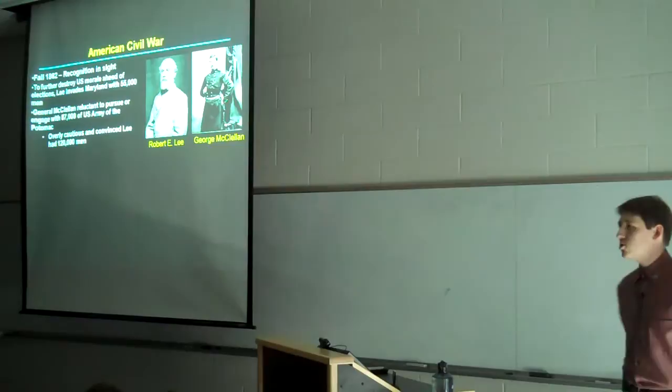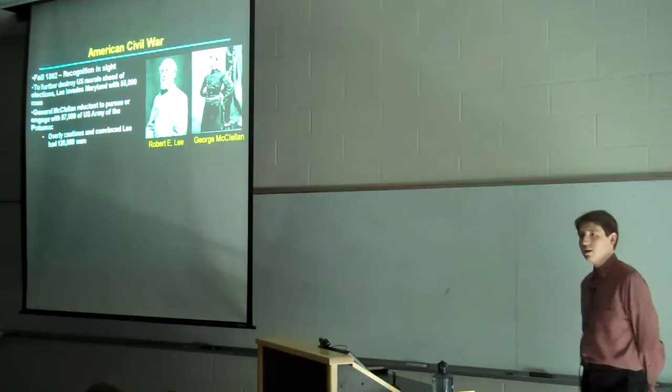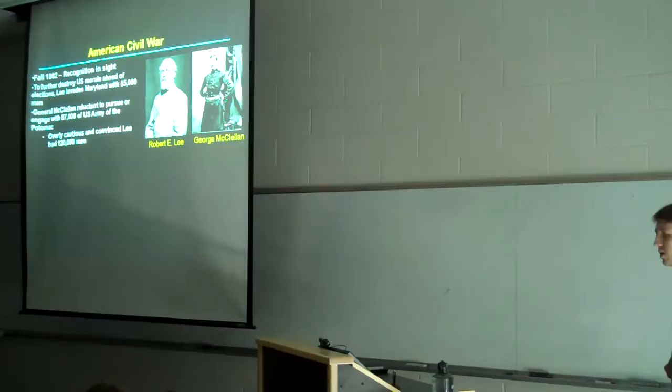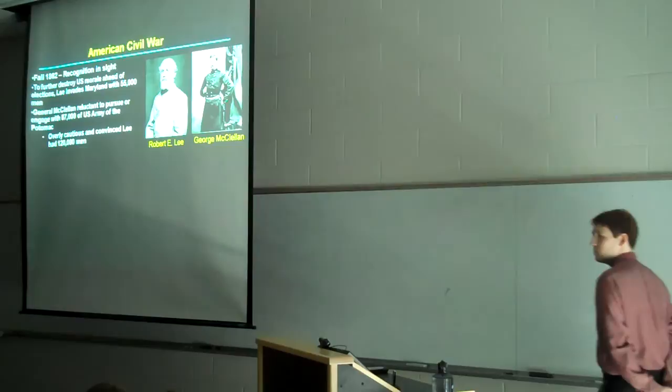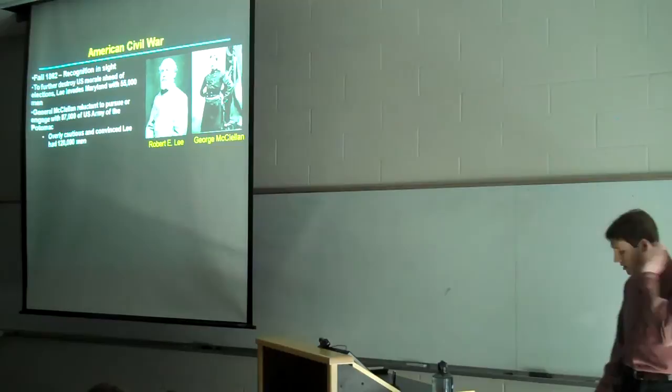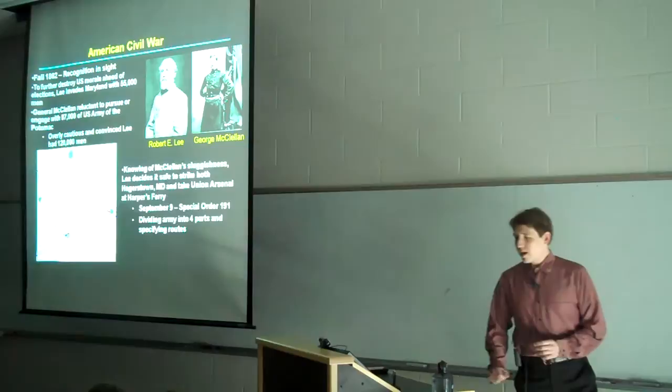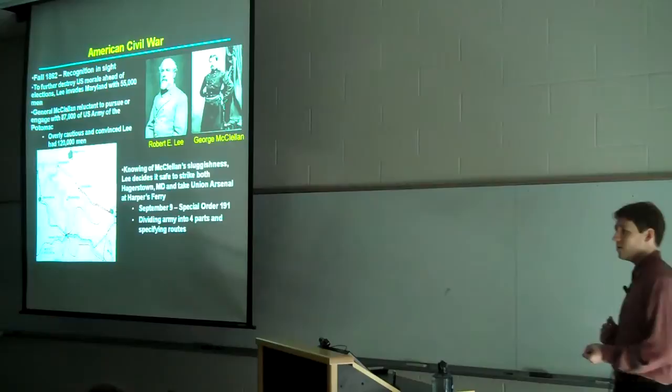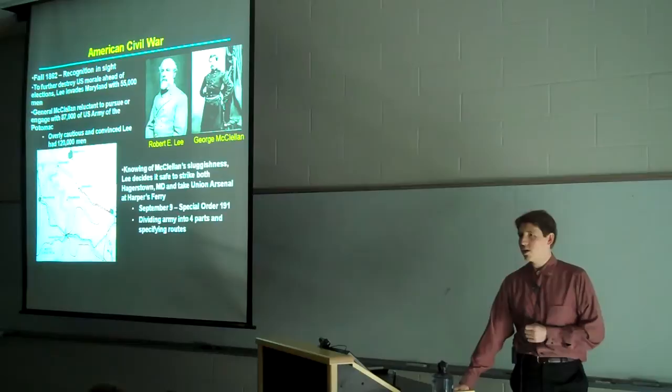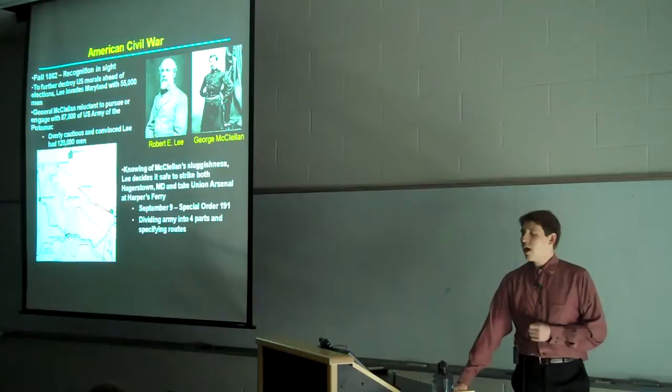Knowing this, and hoping to further destroy U.S. morale in the lead-up to congressional elections, Lee led an invasion force of 55,000 into Maryland, hoping to stir up problems and humiliate the Union. The Union army at the time was led by George McClellan, who was an incredibly cautious general, and although he had 87,000 men under his command, he was convinced that he just could not go out and challenge Lee, because he was sure Lee had 120,000 men. Lee, on the other hand, was not so cautious. He was a very bold man, and knowing McClellan's sluggishness, he decided that it was safe to strike simultaneously at both Hagerstown, Maryland, and take the Union arsenal at Harper's Ferry. So on September 9th, he issued Special Order 191, which ordered the division of the Army of Northern Virginia into four parts, and then specified the routes they were to take and the targets they were to attack.